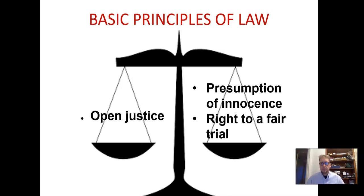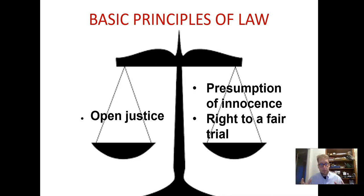That is balanced against two other things: the presumption of innocence — if someone is accused of something, we don't assume that they're guilty, we assume that they're innocent — and also a right to a fair trial. You can see these two things are in opposition. Open justice is what journalists rely on to be able to go and tell stories, but we can't just tell every story and put every piece of information out there at any time, because we have to balance that against a presumption of innocence. We can't go out and say that someone's guilty if they've not been found guilty yet, and we also have to respect the right to a fair trial.